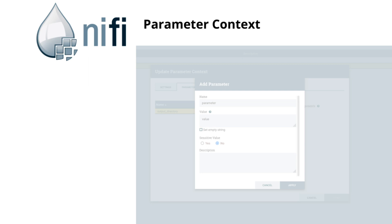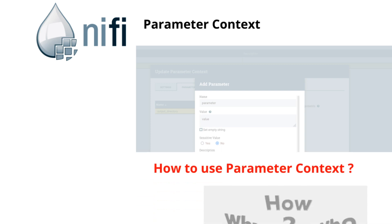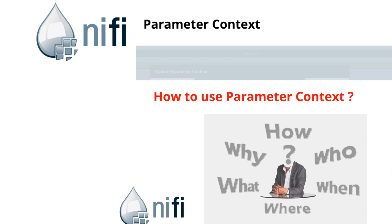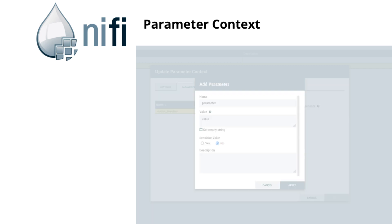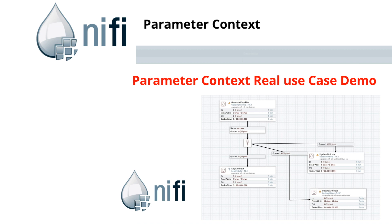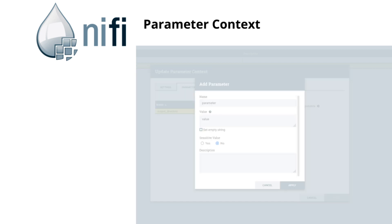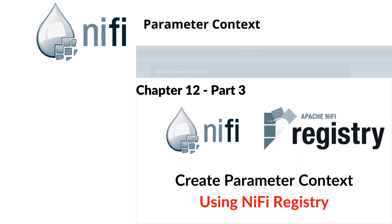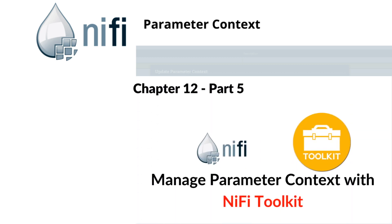Now we are familiar with what parameter context is in NiFi. In the following five chapters on parameter context, we are going to touch on how to use parameter context hands-on in the UI, followed by a parameter context real use-case demo where we demonstrate how parameter contexts are used in real life. We are also going to explore how to create parameter contexts using NiFi registry, and see how the NiFi toolkit can help us manage parameter contexts.